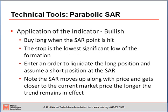To use the indicator in a bullish way is very simple. First, you buy long when the reversal point is hit. The stop will be the lowest significant low of the formation before your long entry. You will enter an order to liquidate the long position — one stop — and assume a short position via another stop-loss order at the same price at the SAR, which means stop-and-reverse point. Note that as the trend goes along, the SAR will move up along with price, getting closer to the current market price the longer the trend remains in effect — that's part of the acceleration factor.